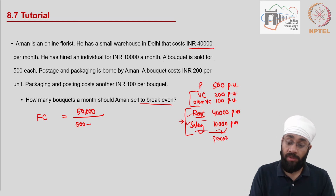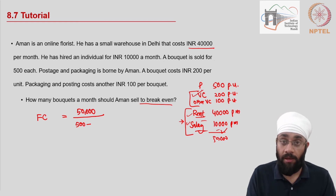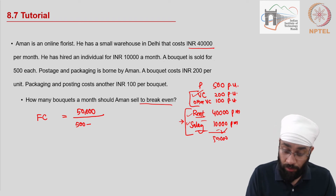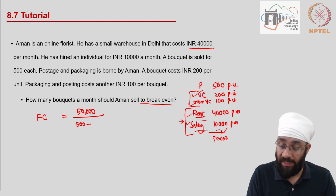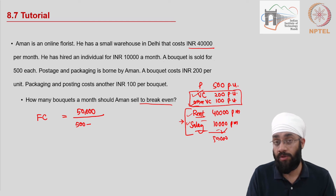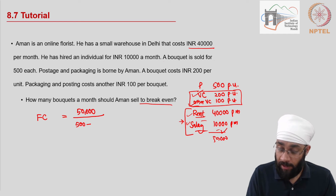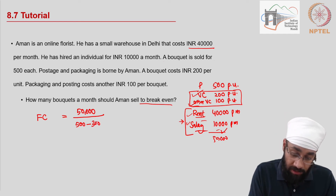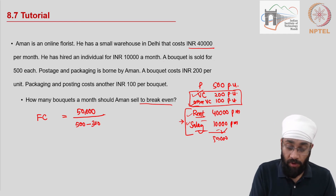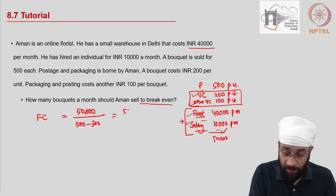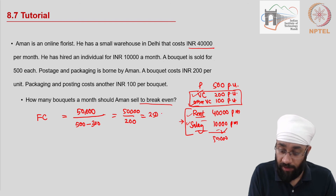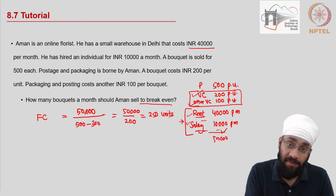There are two components of variable cost: the material of the bouquet at 200 per unit, and the packaging and posting cost. Together the variable cost per unit is 300. So contribution per unit = 500 minus 300 = 200. Break-even = 50,000 divided by 200 = 250 units. You have to sell 250 bouquets in a month to break even.